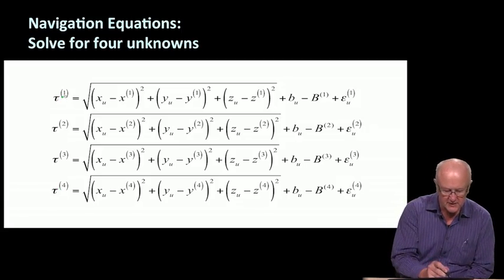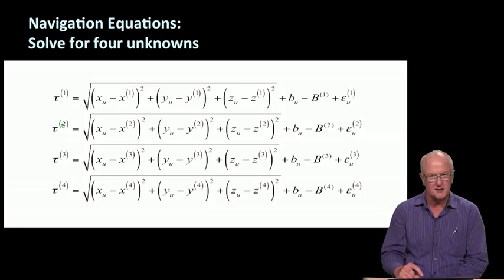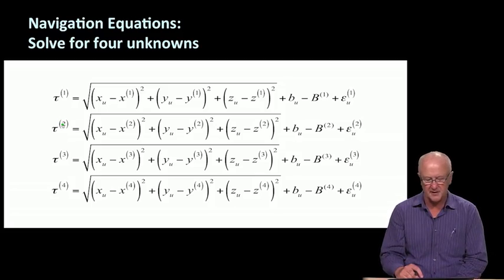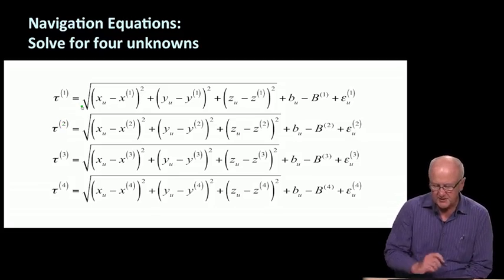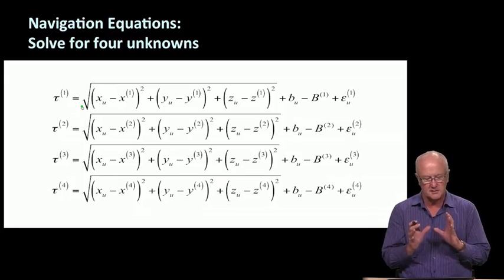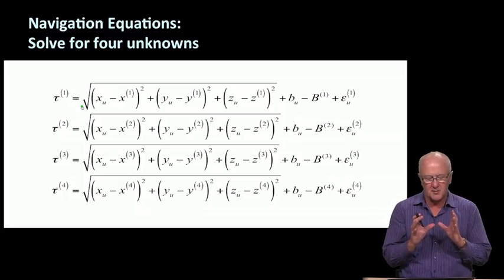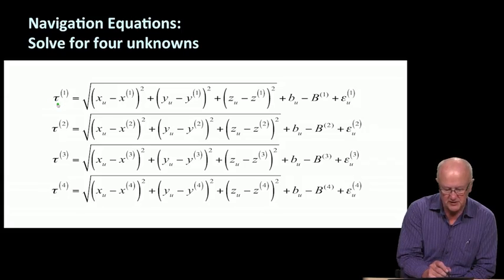The right-hand side is equal to distance. Notice I have obliterated the dimensional correctness—tau suggests time in seconds, yet here I have something that's a distance in meters.